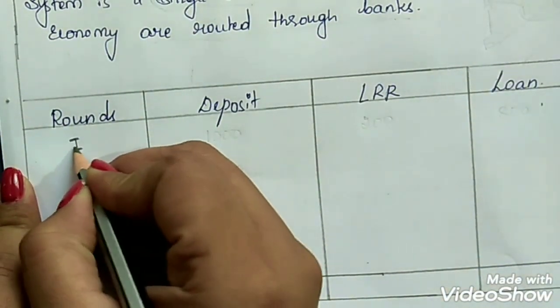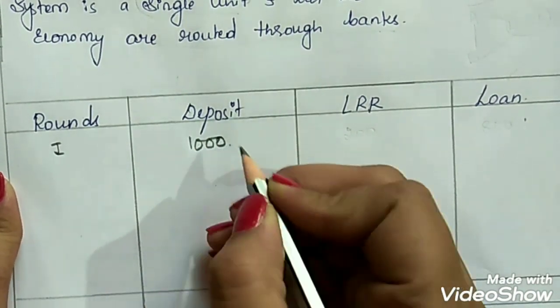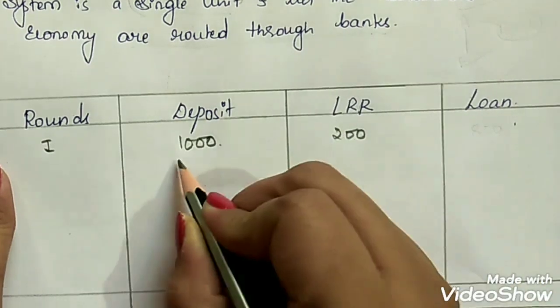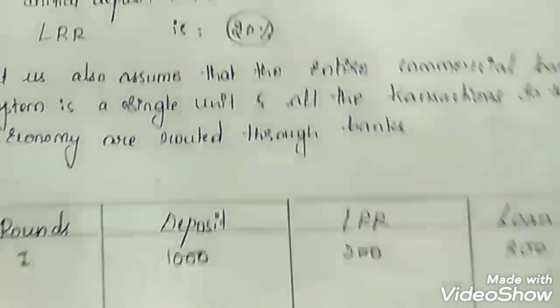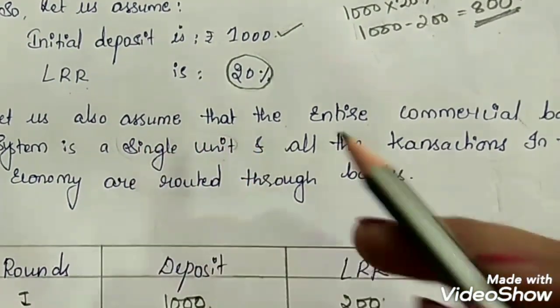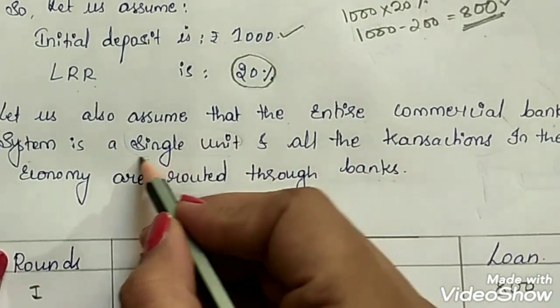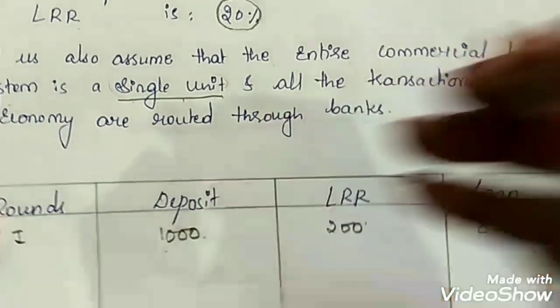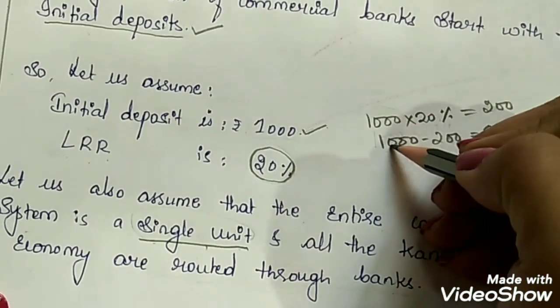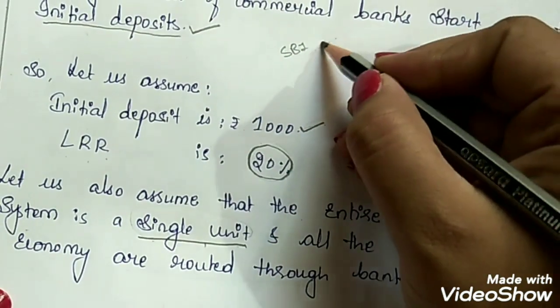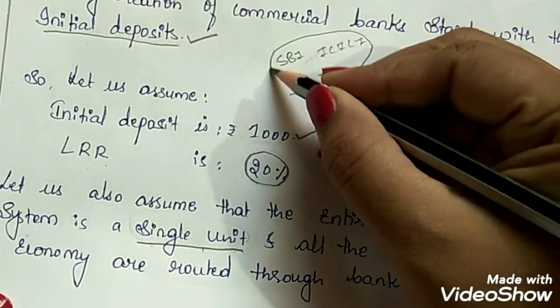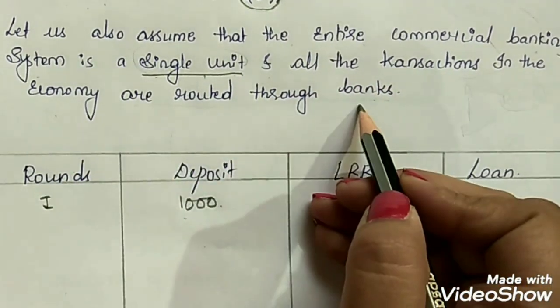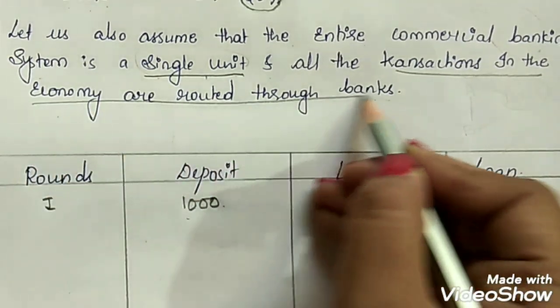Showing this in a table: Round 1 — initial deposit rupees 1000, LRR rupees 200 (20% of 1000), loan given rupees 800. An important assumption is that the entire commercial banking system is treated as one single unit — whether it is SBI, ICICI, Canara Bank, or Axis Bank, all are treated as one unit. Also, all transactions in the economy are routed through banks.